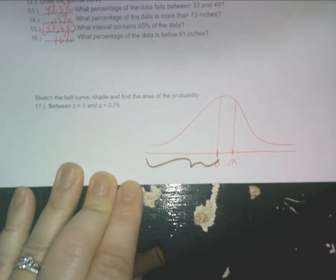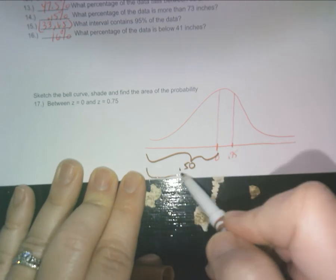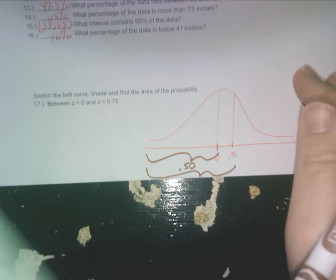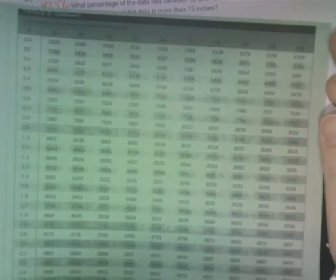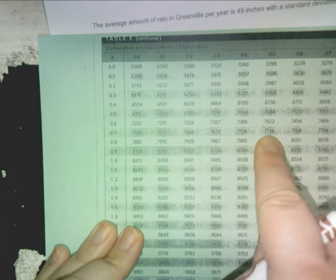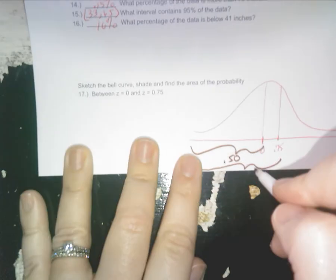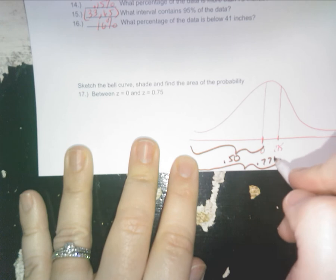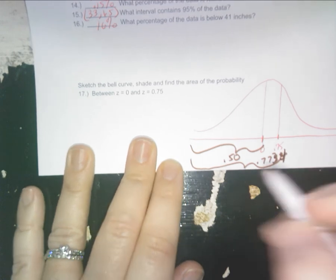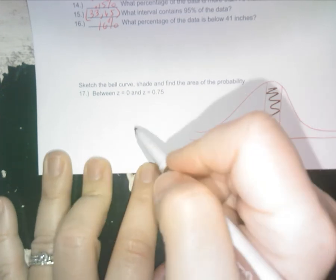Well, you should all know that one. I mean, you can go on your green sheet, but what's that one? 0.5. Okay, then you go on your green sheet and you go to 0.75z. So let's see, 0.75, here's 0.75, I have 0.7743. And what do you do with those two numbers? If it's a between area, subtract. So your final answer is 0.2734 or 27.34%, whichever way you write it, I will accept.